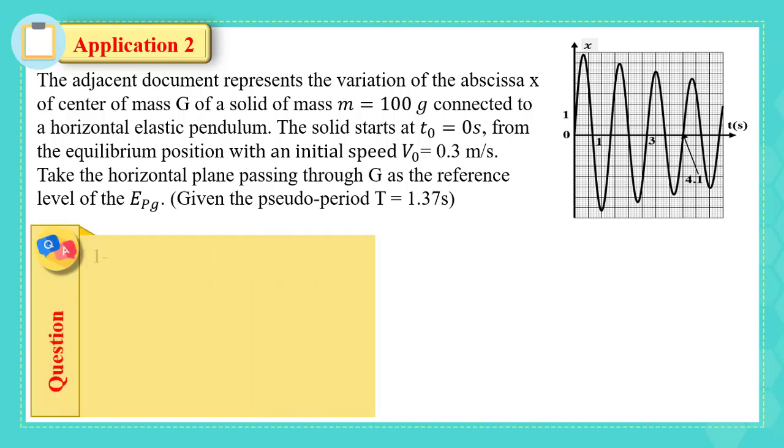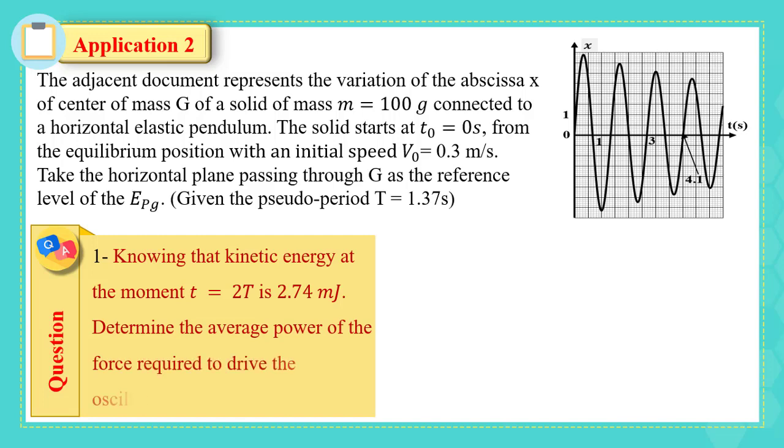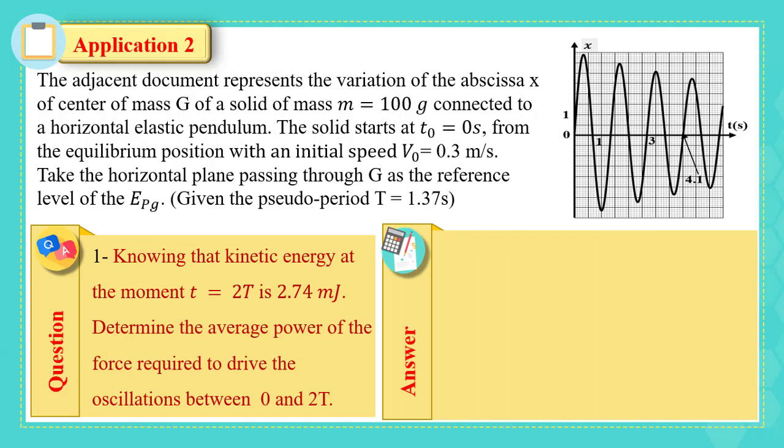The first part. Knowing that the kinetic energy at the moment T equals to 2 periods is 2.74 millijoules, determine the average power of the force required to derive the oscillations between 0 and 2 periods. Remember the expression of the average power, which is the absolute value of the variation in the mechanical energy with respect to variation in time.